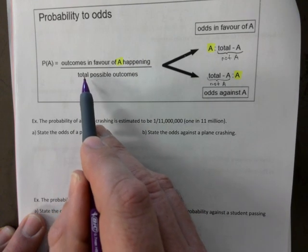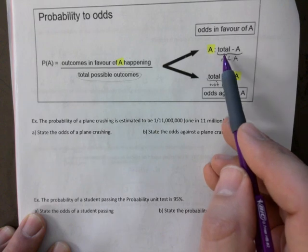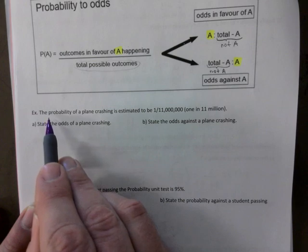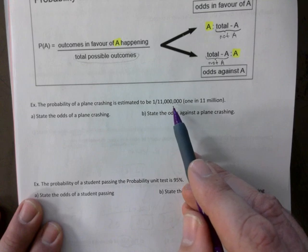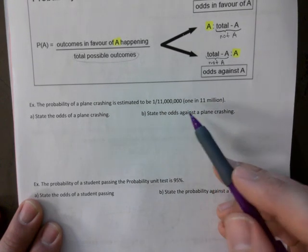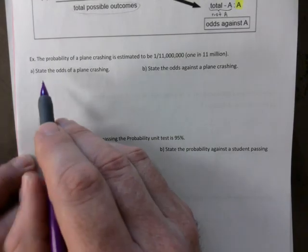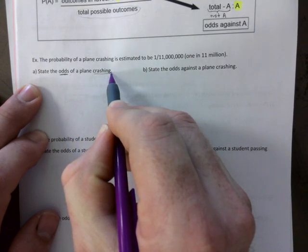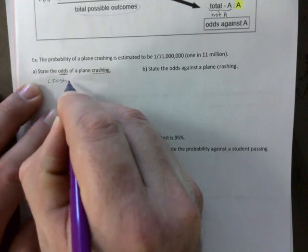The denominator is your total possible outcomes — you use it to subtract. The probability of a plane crashing is estimated to be 1 in 11 million flights. State the odds of a plane crashing — that's odds in favor of crashing. So 'crash' goes on the left side, and 'not crashing' goes on the right. We plug in the numbers: 1 on the left, and 11 million minus 1 on the right.